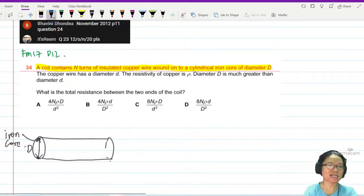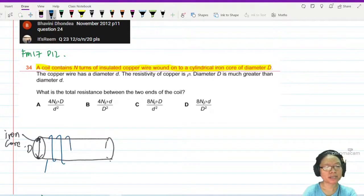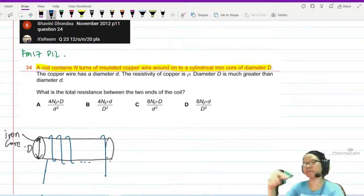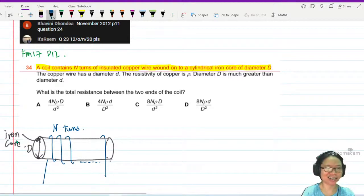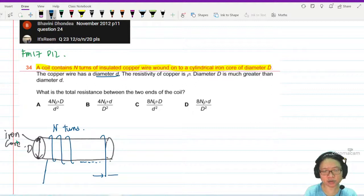And this coil has n turns, so I'm going to make a wire and turn this way. Many, many times TLDR lazy to draw until here. Okay, so I continue the turn and this is n turns. Copper wire has a diameter d. This is the diameter of this wire, okay? D.